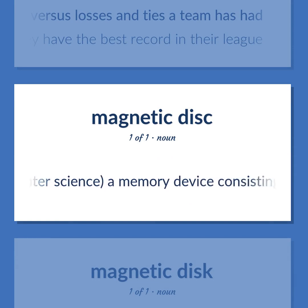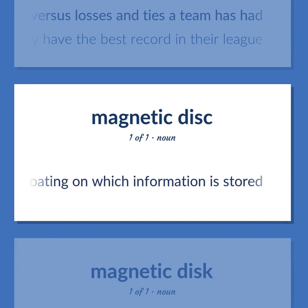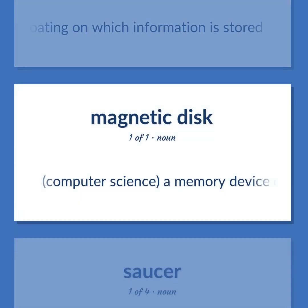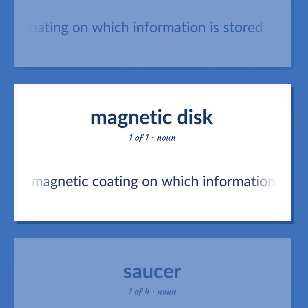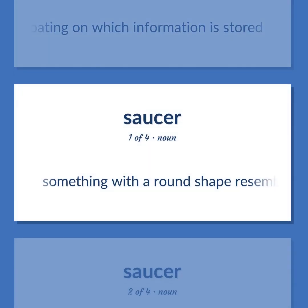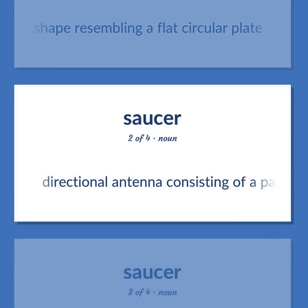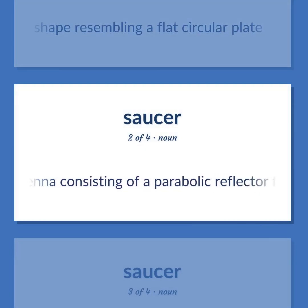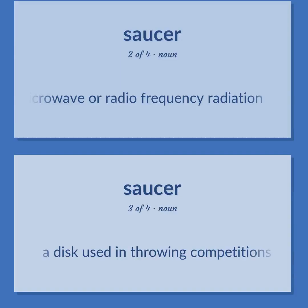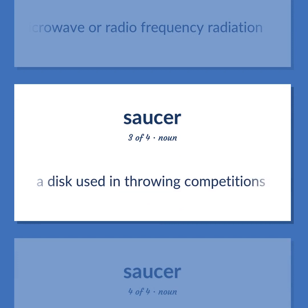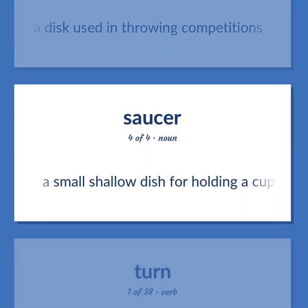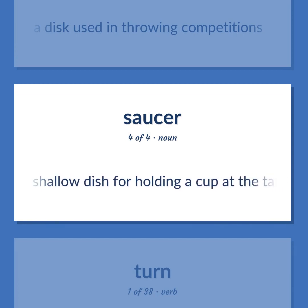Computer Science: a memory device consisting of a flat disc covered with a magnetic coating on which information is stored. Something with a round shape resembling a flat circular plate. A directional antenna consisting of a parabolic reflector for microwave or radio frequency radiation. A disc used in throwing competitions. A small shallow dish for holding a cup at the table.